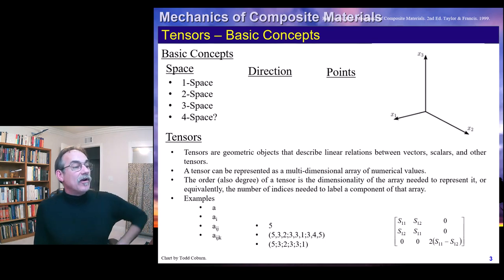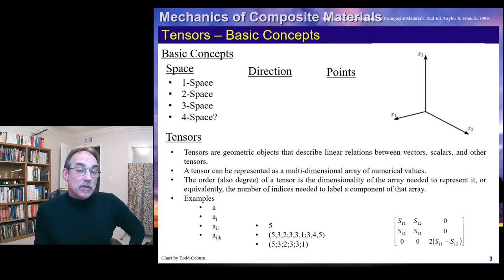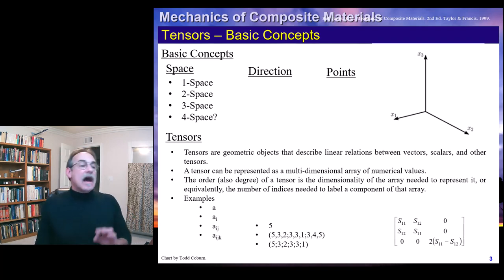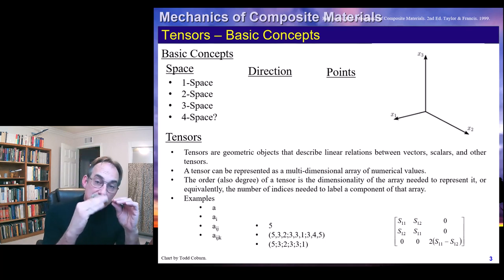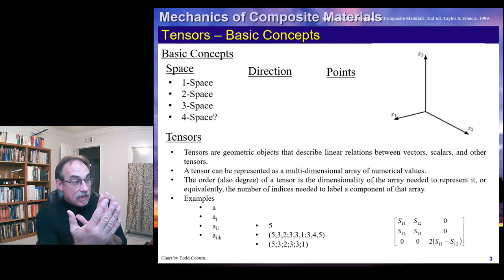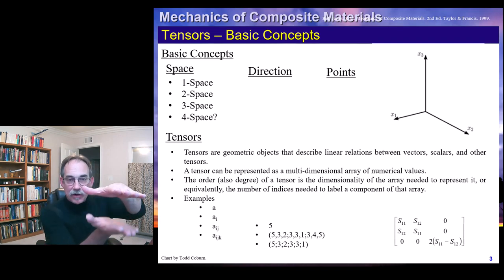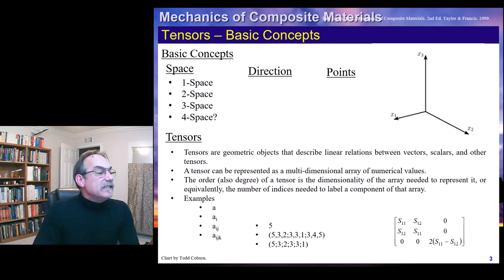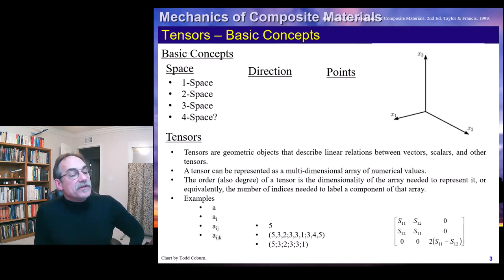A scalar like 5 is a single value. An entry like 5,3,2 semicolon 3,3,2 represents the next row — refer back to our matrix notation and MATLAB videos for that. A 3×3 matrix, like 3,4,5 in the third row, uses two subscripts: i for each row and j for each column. If we had a series of planar matrices stacked like transparencies, that would be the third index. This compliance matrix shown is a 3×3 with two indices — a second-order tensor.